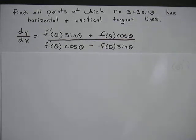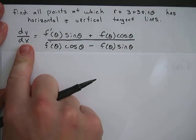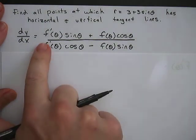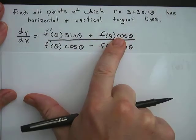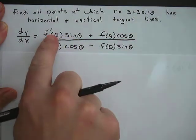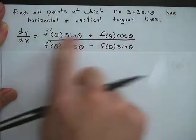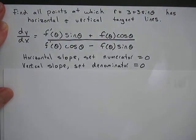For this problem, we're asked to find all points at which r equals 3 plus 3 sine theta has horizontal and vertical tangent lines. Here is the formula for finding the derivative of a polar function. f(θ) is this function, 3 plus 3 sine theta, and f′(θ) is the derivative of this function, which we'll write down. Here's the derivative formula.